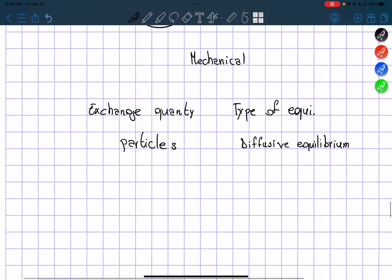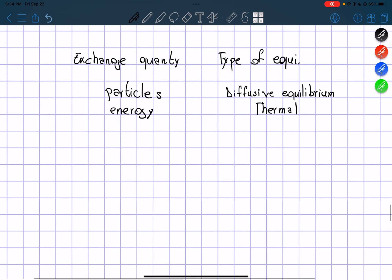When we have thermal equilibrium, what are we exchanging? We're not exchanging temperature, we're exchanging energy. Now we can see that we're not exchanging temperature between the two of them, but we're exchanging energy. The last one, mechanical, we're exchanging volume.